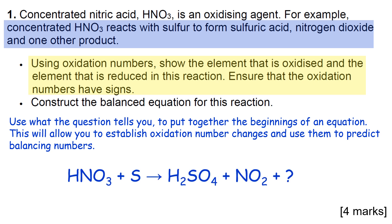Obviously this isn't a complete equation - we haven't balanced it yet and we also have a missing product. But we put down what the question has told us: HNO3 is reacting with sulfur, and it makes sulfuric acid and nitrogen dioxide plus something else.